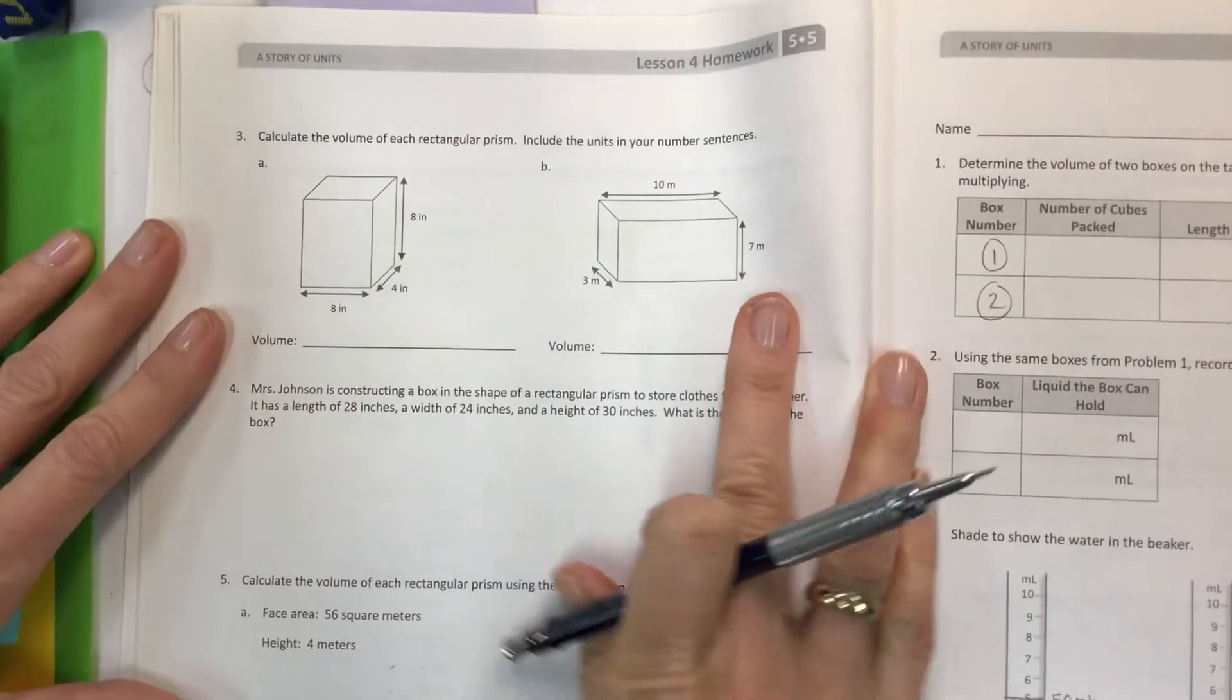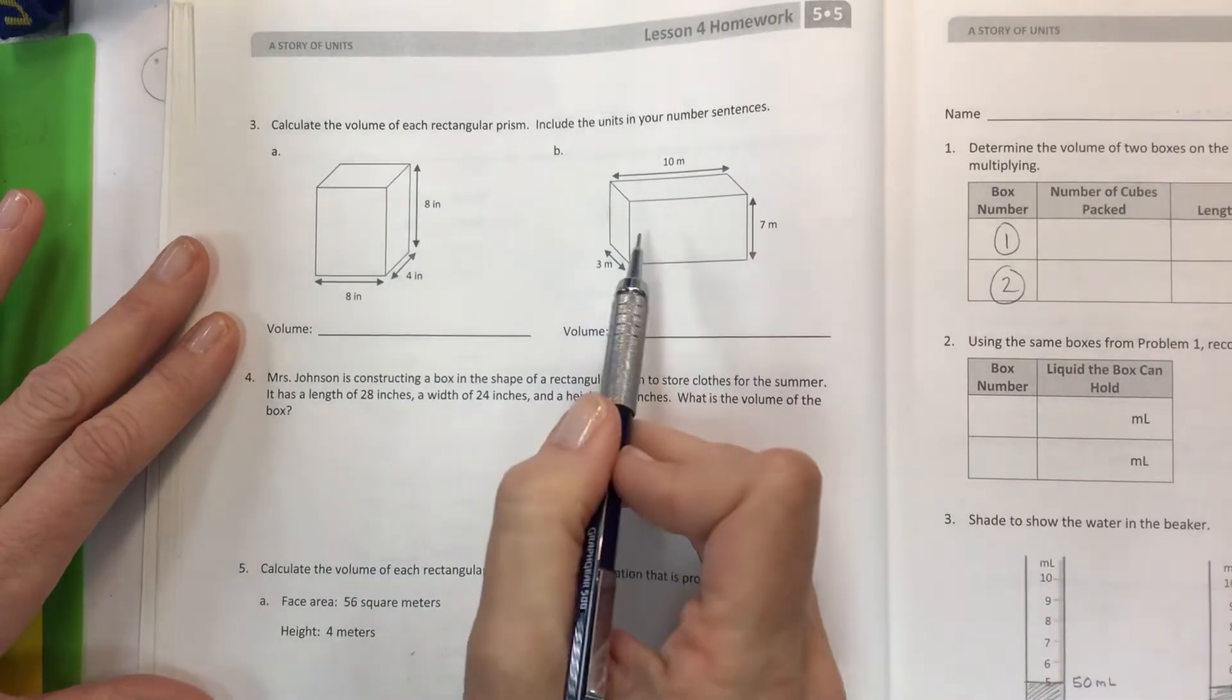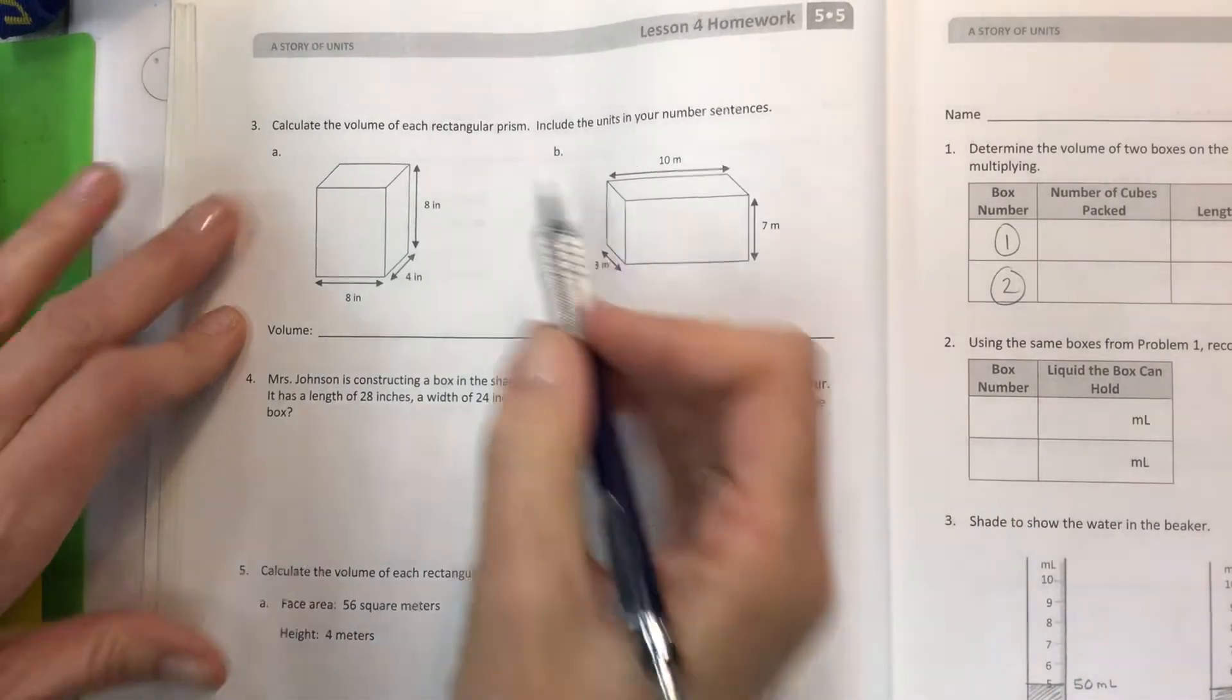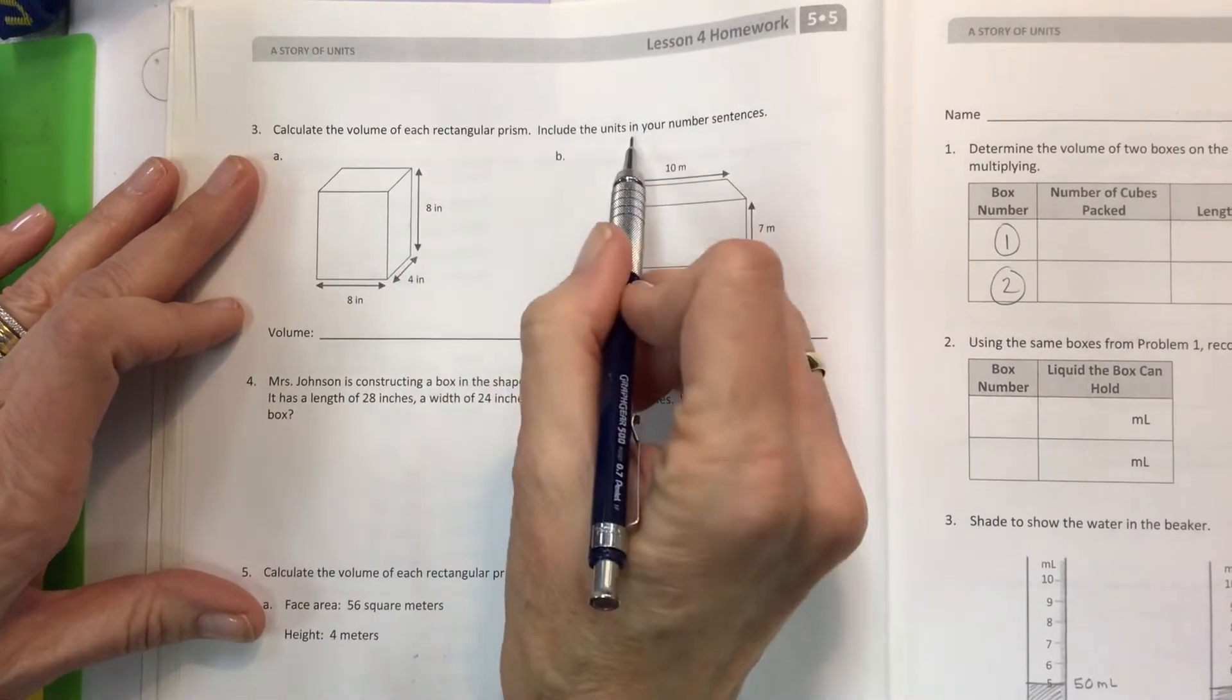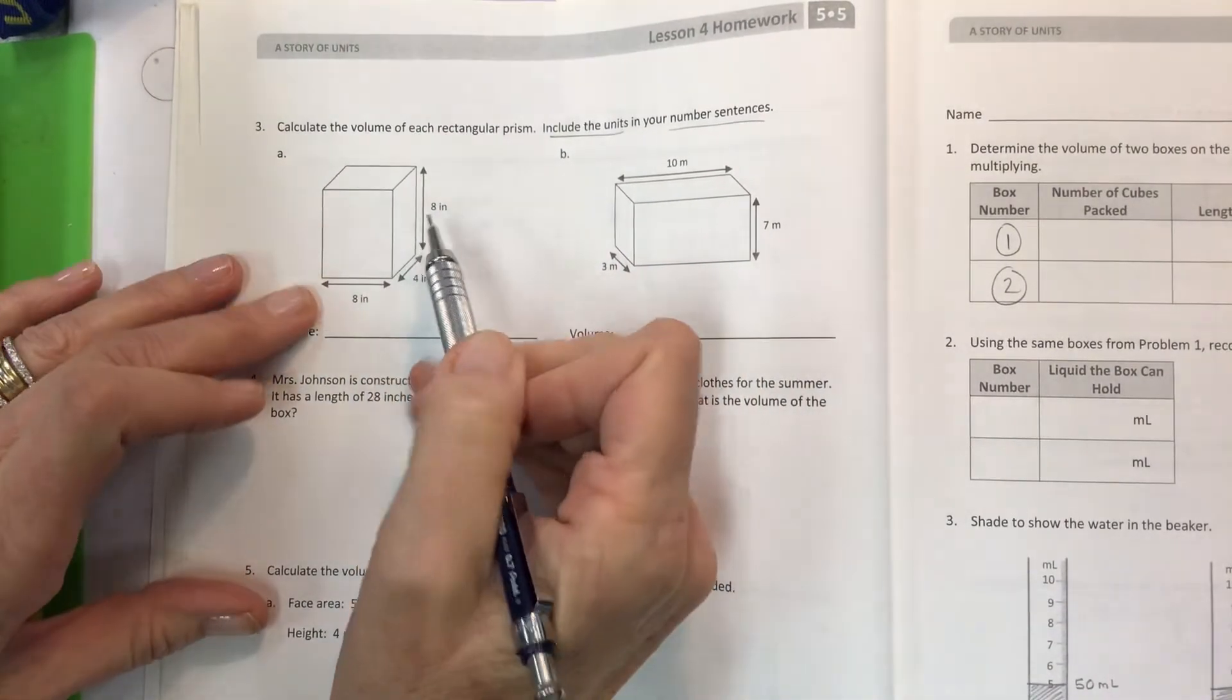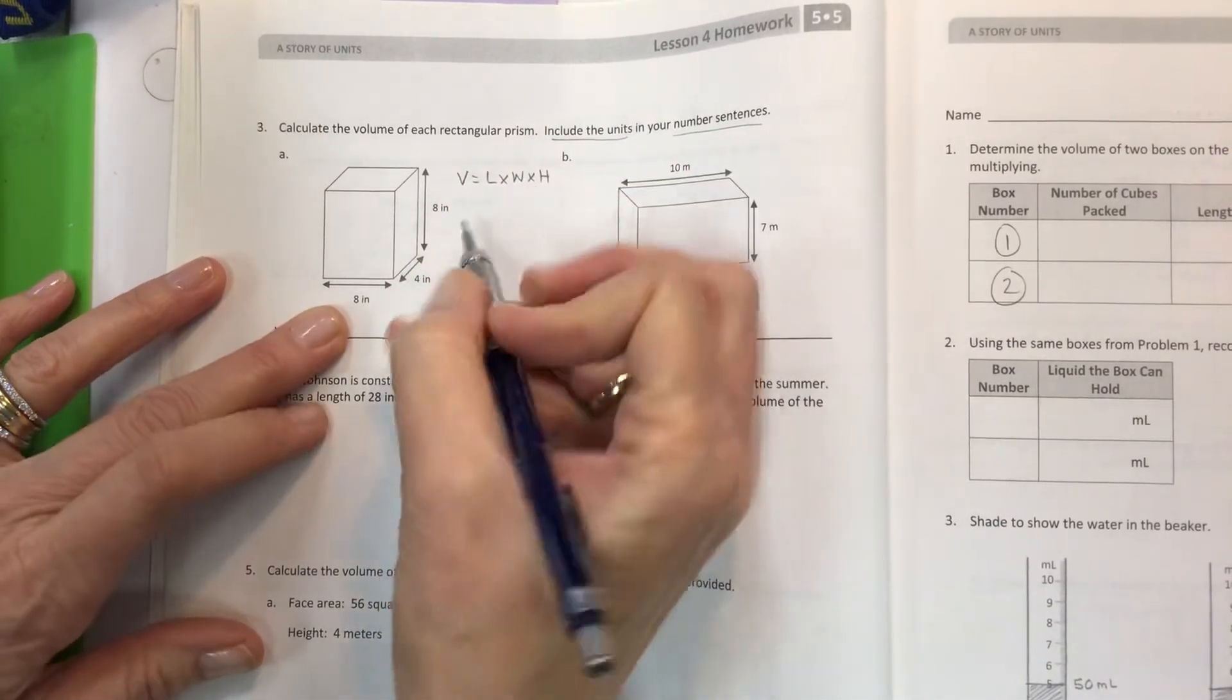On the back we have some rectangular prisms that don't have the individual cubic units showing, which is actually better. It really is because all those little lines make kids get confused. So we're going to calculate the volume of each rectangular prism and include the units in your number sentences. This is where they're really particular and I'm not. So we're going to do length times width times height. LWH. Memorize that. You need to know it.